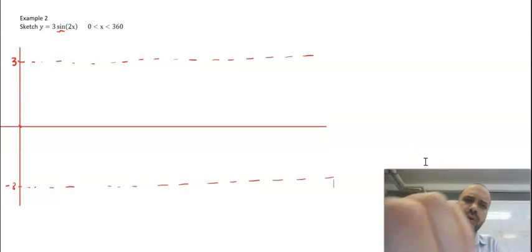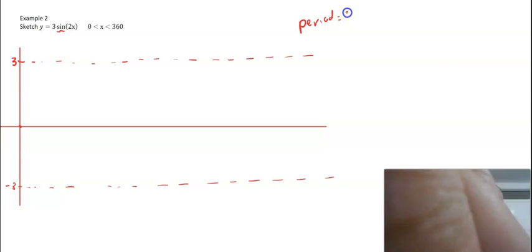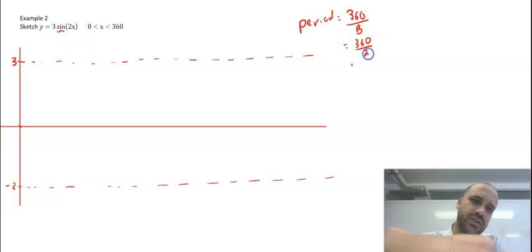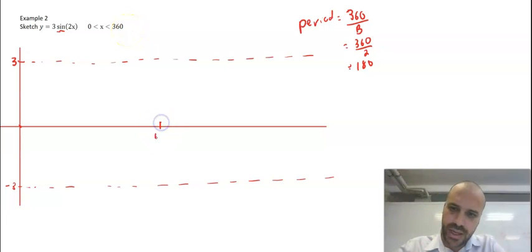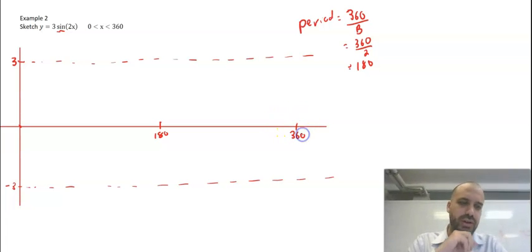Finally, we want to find the period. We know that the period is going to be equal to 360 over the B value. We know that the B value is 2, so we've got 360 over 2. The period is going to be 180. We want to graph it between 0 and 360. Let's put a 180 here, double that to here, and that's about 360.